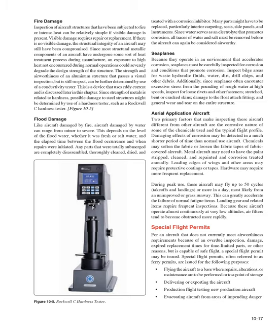Aerial application aircraft: Two primary factors that make inspecting these aircraft different are the corrosive nature of chemicals used and the typical flight profile. Damaging effects of corrosion may be detected in a much shorter period of time than with normal use aircraft. Chemicals may soften fabric or loosen fabric tapes on fabric-covered aircraft. Metal aircraft may need paint stripped, cleaned, repainted, and corrosion treated annually. During peak use, these aircraft may fly up to 50 cycles or more in a day, most likely from unimproved or grass runways, greatly accelerating normal fatigue items. Landing gear and related items require frequent inspections, and air filters tend to become obstructed more rapidly.